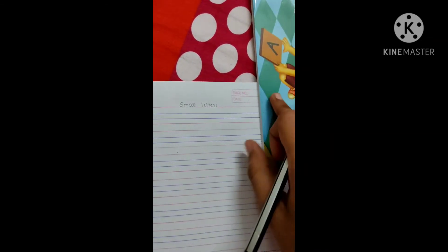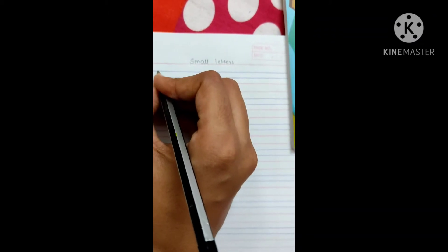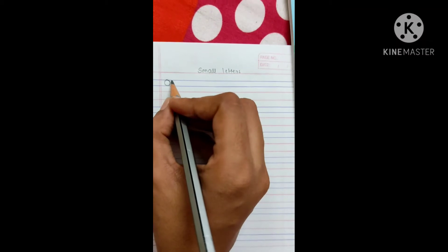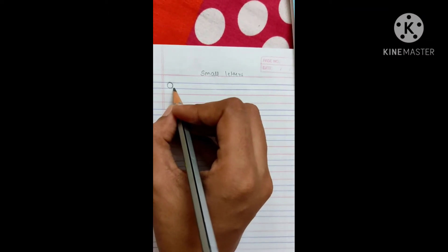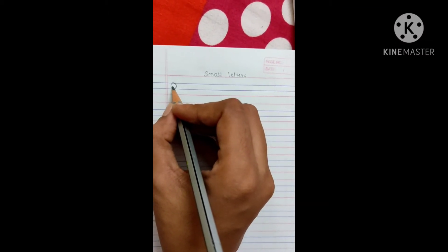Now, we are going to learn O. Which letter? O. So, we are going to use the blue line only. In the blue line, we are going to write O.